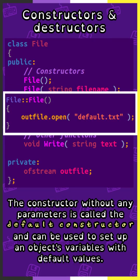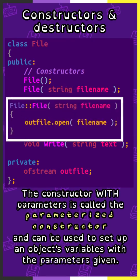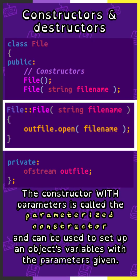The constructor without any parameters is called the default constructor, and can be used to set up an object's variables with default values. The constructor with parameters is called the parameterized constructor, and can be used to set up an object's variables with the parameters given.